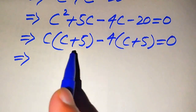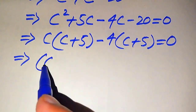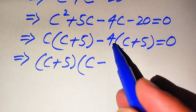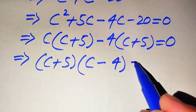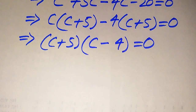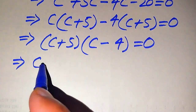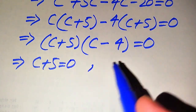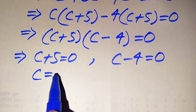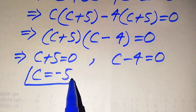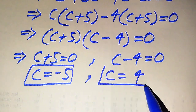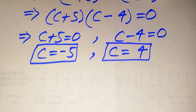Both of the first two terms involve C, so we take C as a common factor to get C(C plus 5), and from the remaining terms we take minus 4 as common to get minus 4(C plus 5) equals 0. Taking (C plus 5) as common from both gives (C plus 5)(C minus 4) equals 0. From the first case, C plus 5 equals 0, giving C equals minus 5. From the second case, C minus 4 equals 0, giving C equals 4.